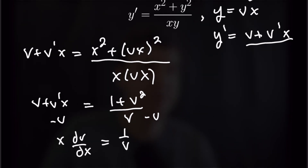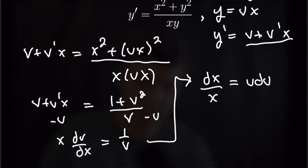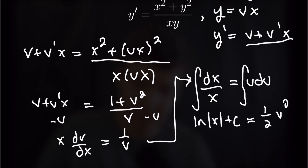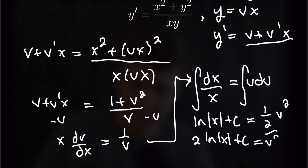Now we have an equation that is in fact separable. Separating variables gives us v dv is equal to dx over x. Taking the antiderivative of both sides, the left hand side gives us just the natural log of x plus c, and the right hand side gives us one half v squared. Absorbing the half into our constant, we get 2 times the natural log of x plus c equals v squared. Using logarithm rules, that means v squared is equal to the natural log of x squared plus c.